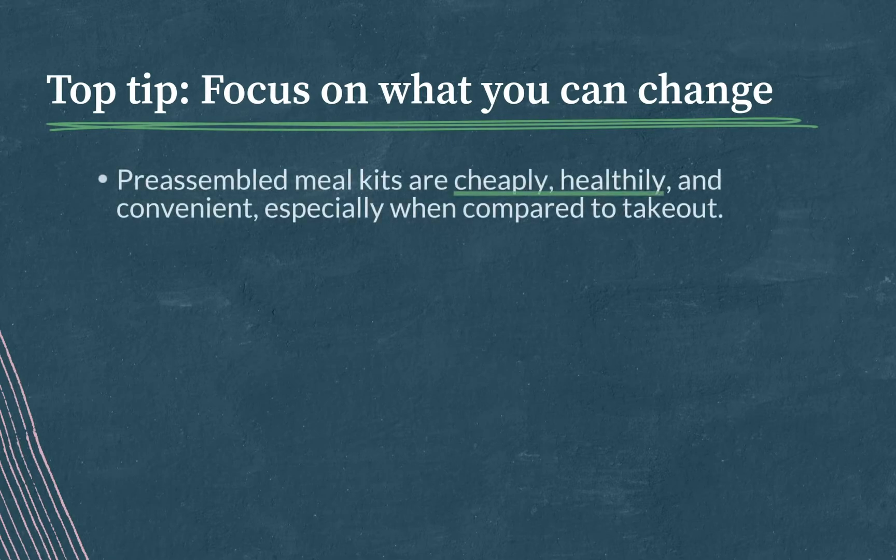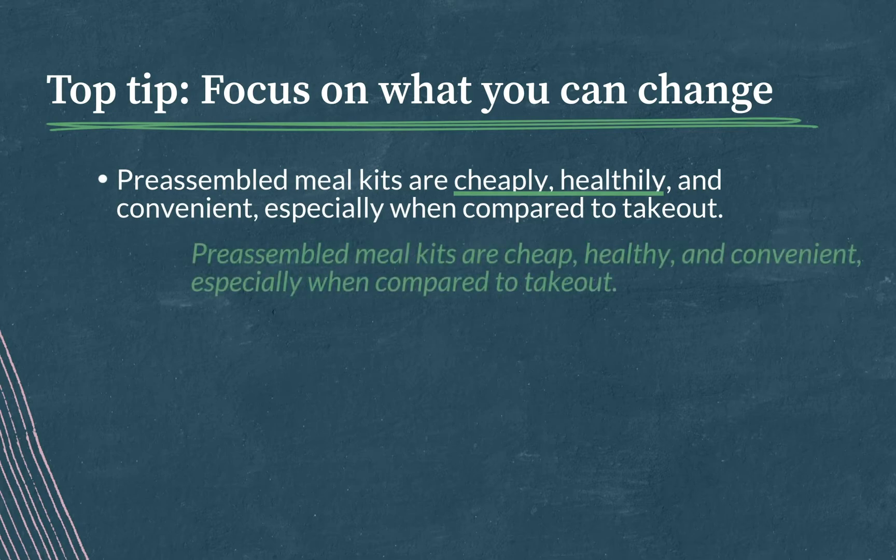Pre-assembled meal kits are cheaply, healthily, and convenient, especially when compared to takeout. And this one's a little tougher, right, because the adverbs cheaply and healthily are parallel with each other, but they're underlined, and convenient is not. So we have to take our cues from convenient, which is an adjective, and that means we have to change the underlined adverbs into adjectives to maintain parallel structure with convenient. Giving us, pre-assembled meal kits are cheap, healthy, and convenient, especially when compared to takeout.